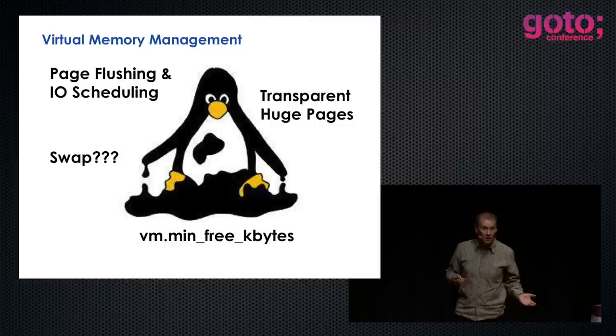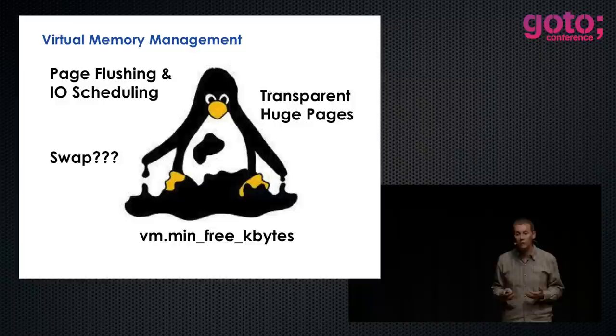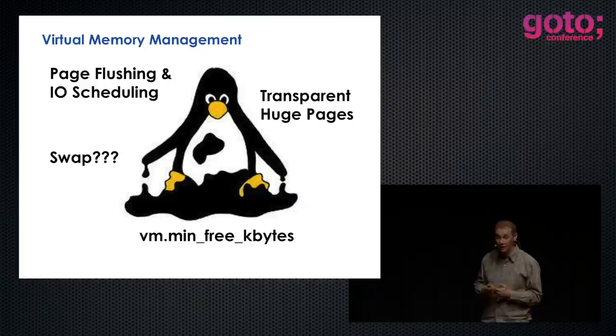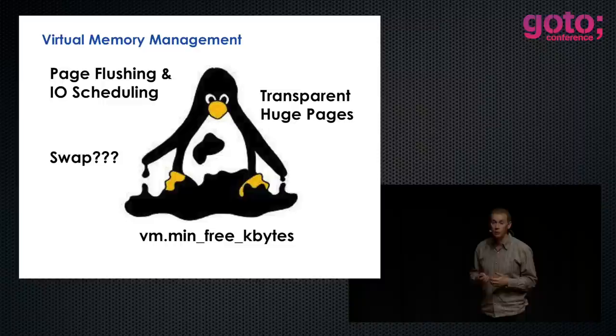Coming up from hardware into the operating system: so many teams have programmers who do not talk to systems people, and vice versa. Things are so misconfigured. We need to work better together because there are a number of things at the OS level that need to be configured or set up, otherwise they have a massive impact on performance. Virtual memory systems, how we set up buffers for networking, how we set up buffers for storage — if these are misconfigured, it's a 3-4x difference in performance, sometimes 10x. Most people don't do any work in this area. We could be spending weeks optimizing code when all we needed was a kernel parameter change for a 3-4x speedup.